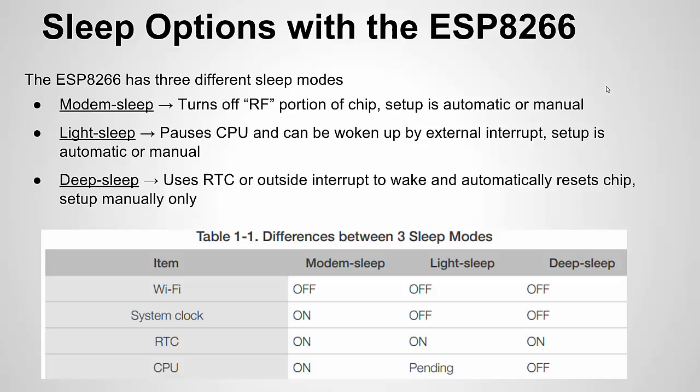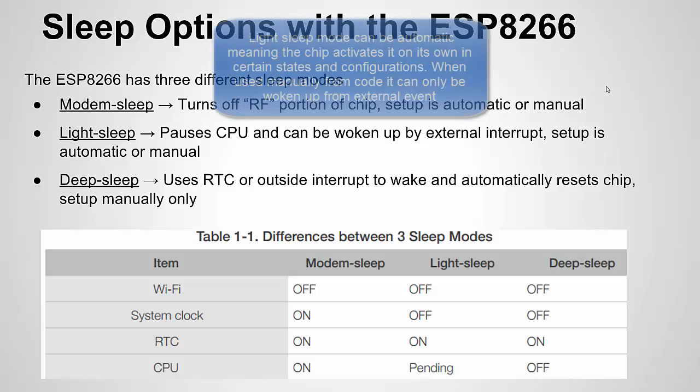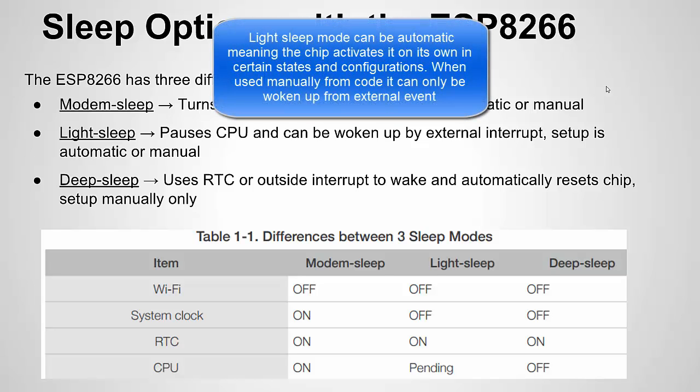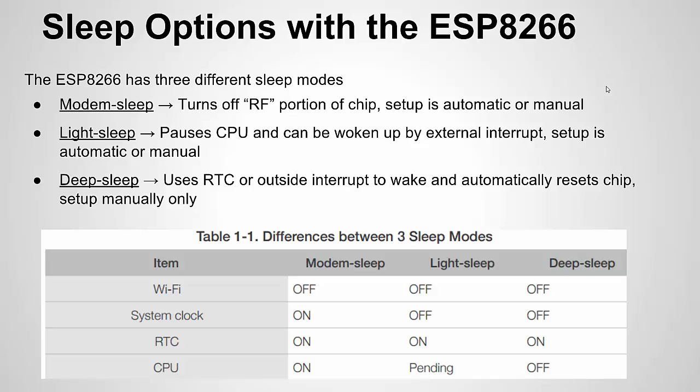There's also an automatic function where the chip automatically uses modem sleep, but the manual way is called forced modem sleep. Light sleep turns off most things except for the real-time clock and pauses the CPU, so the CPU can continue where it left off. When you're in manual light sleep mode, you can only be woken up by external interrupts. Light sleep isn't really supported much by the Arduino libraries at the time of this video, so I'm not going to go into light sleep.